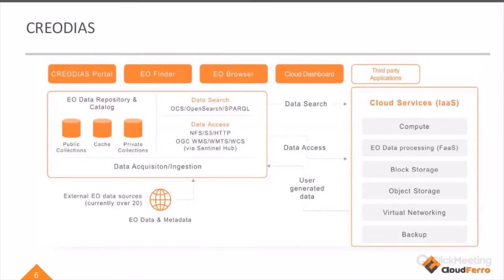CreoDIAS is a CreoDIAS portal, and on that portal you can find very useful tools: EO Finder and EO Browser. These tools are dedicated for users who would like to visualize data online and download data locally to computers. We also have Cloud Dashboard, dedicated for users who would like to use cloud environment benefits — giving access to Earth observation data, a huge repository, and also an environment for data processing and data storage. Depending on user needs, you can use just the portal tools, or move to the cloud and do everything online in the cloud environment.